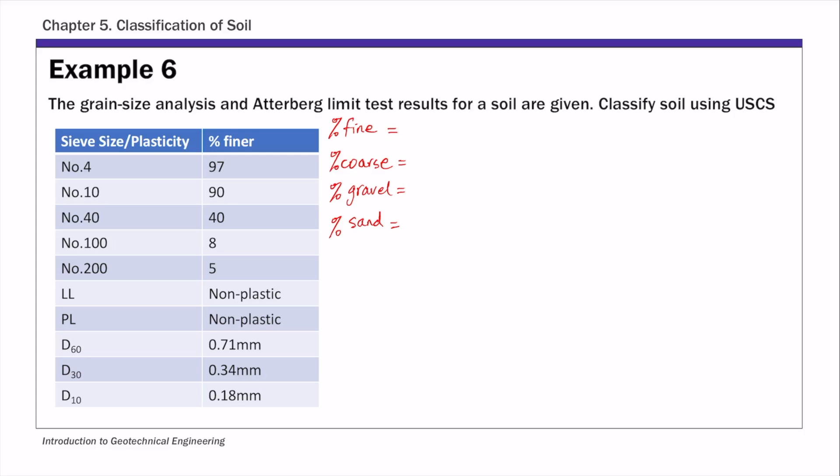This is example six of chapter five on soil classification. In this example we are given a table that shows the sieve analysis results, the Atterberg limit test results, and also d60, d30, d10 values, which we typically read from a particle size distribution curve.